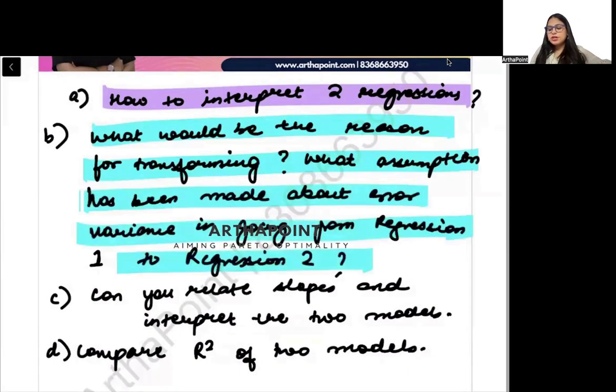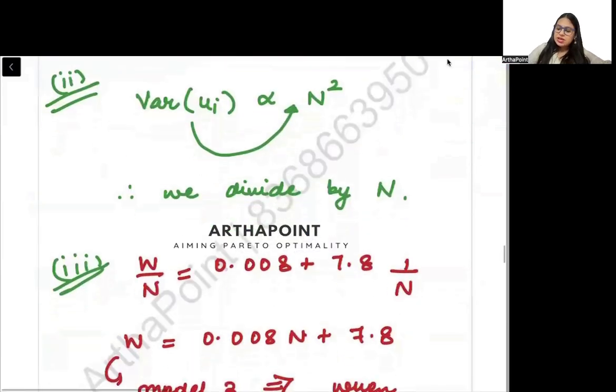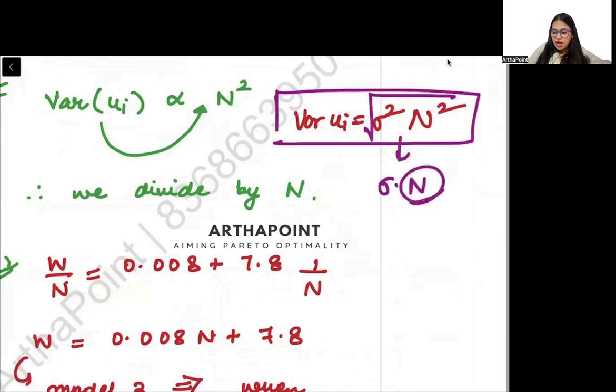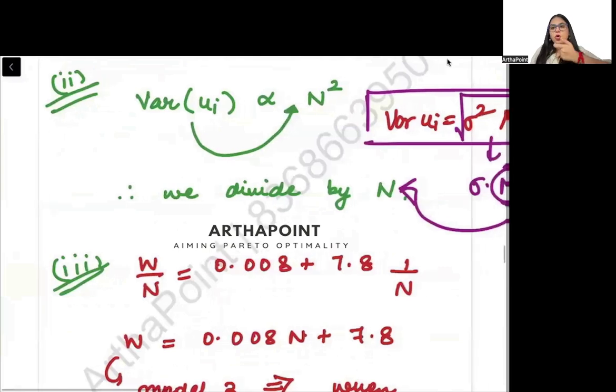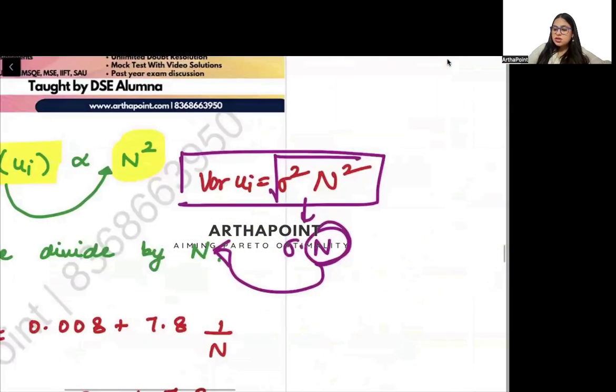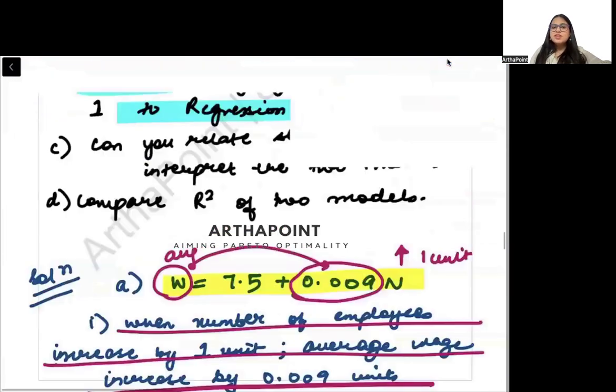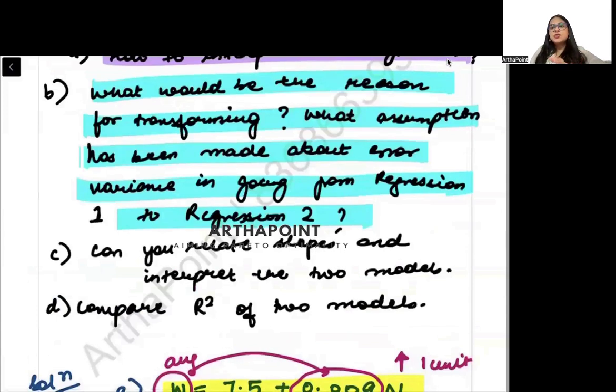What assumption has been made about error variance while going from Regression 1 to Regression 2? We assume that variance of error would be sigma squared N squared. Whenever variance is in sigma squared N squared form, if I take its square root it will be sigma into N. We will divide by N. Since in the model we are dividing by N, we are assuming the variance is proportionate to N squared. In particular, we are assuming that the variance of ui is sigma squared N squared.